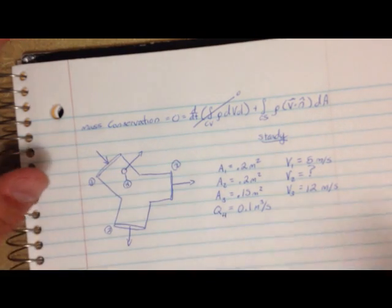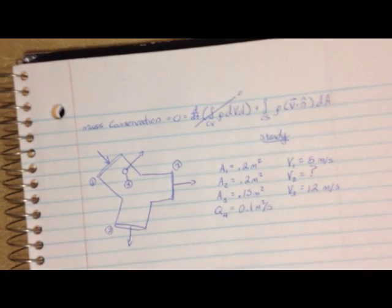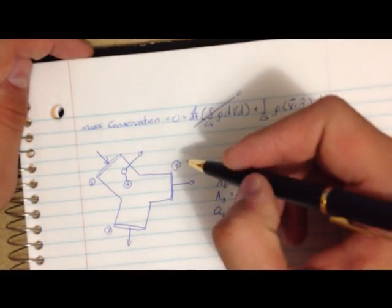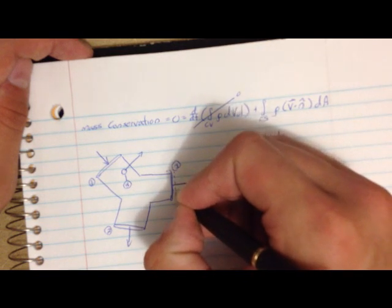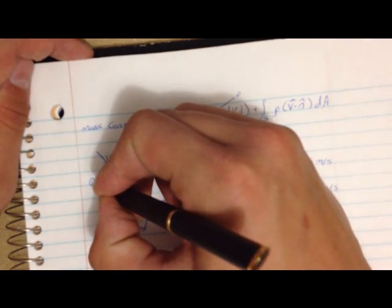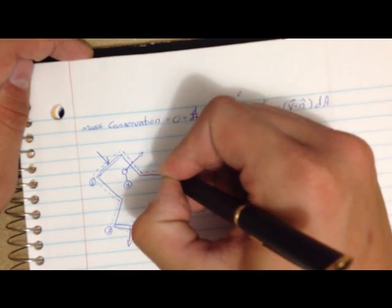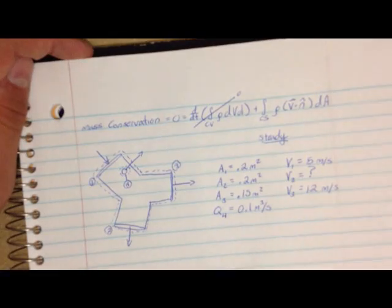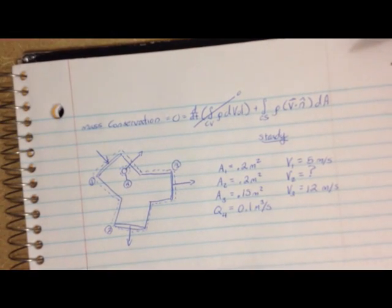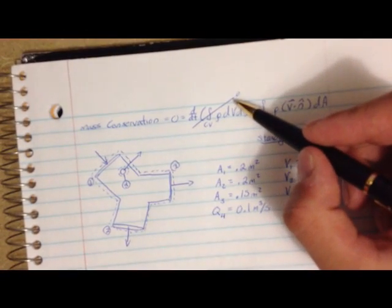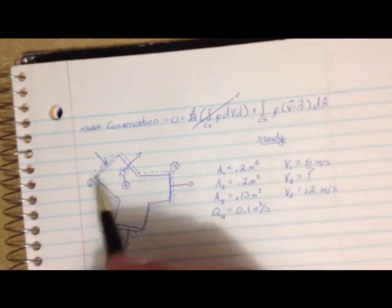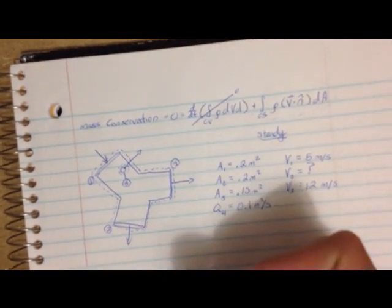The first thing we're going to do is draw our control surface around all the entrances and exits. I'm going to draw a dotted line around all my entrances and exits to represent my control surface. Since we already said this is a steady state problem, meaning there's no change with time, we've already crossed out the time-derivative part of our equation. What we're left with is the control surface integral.